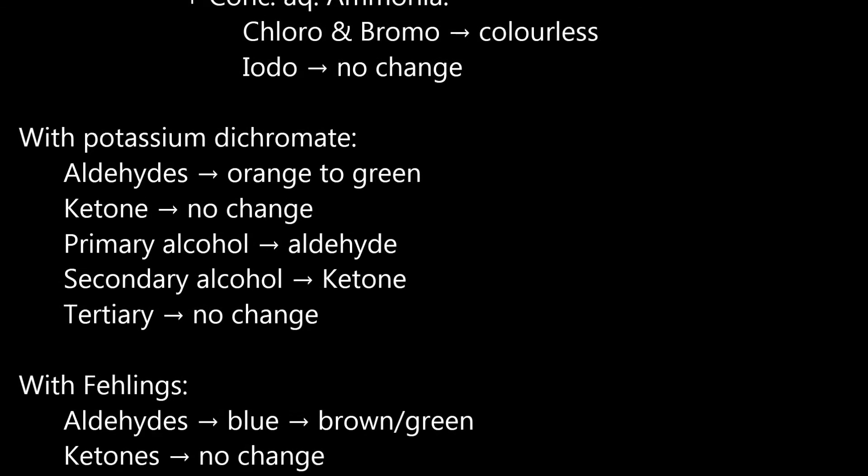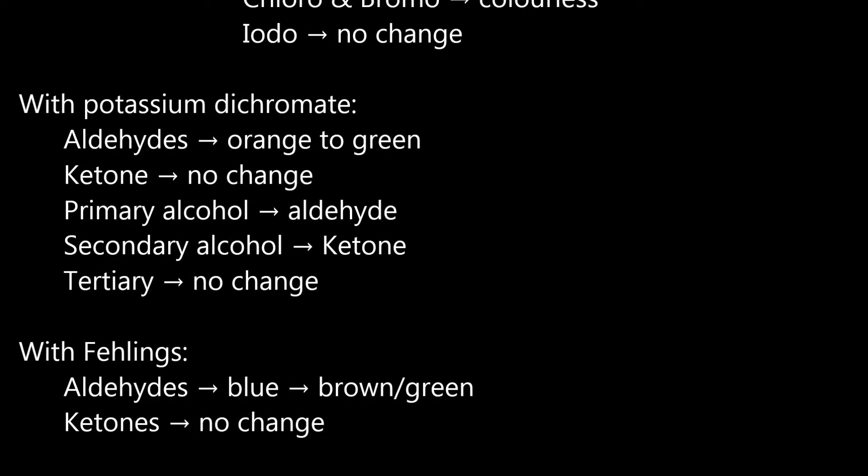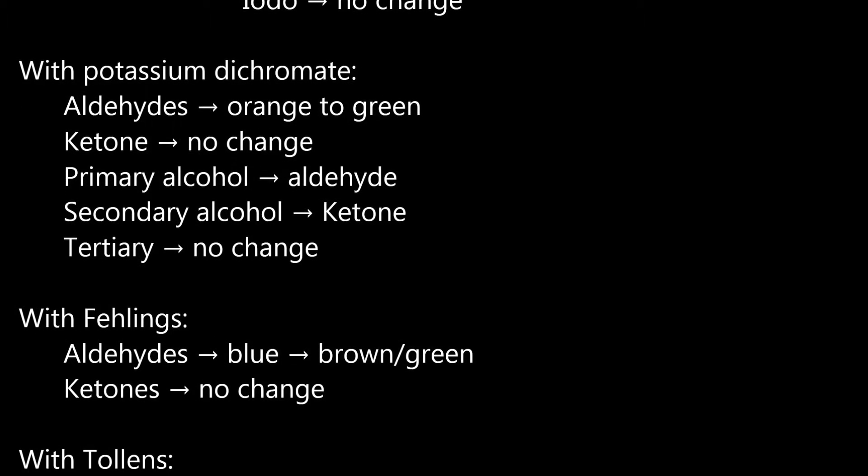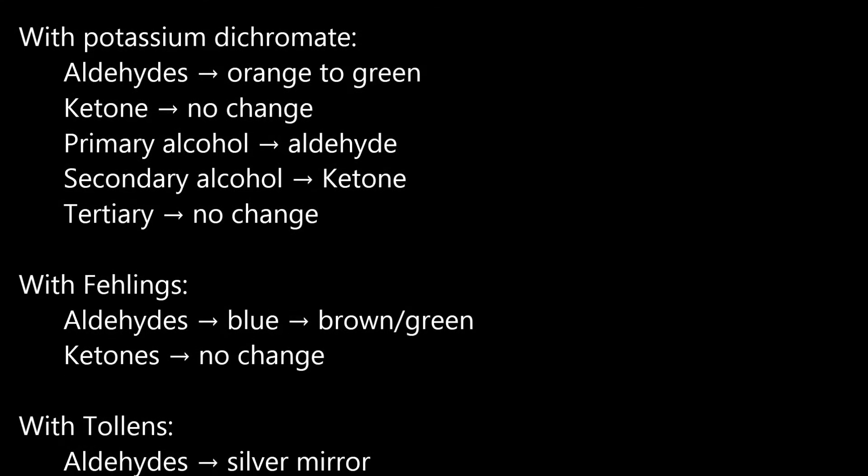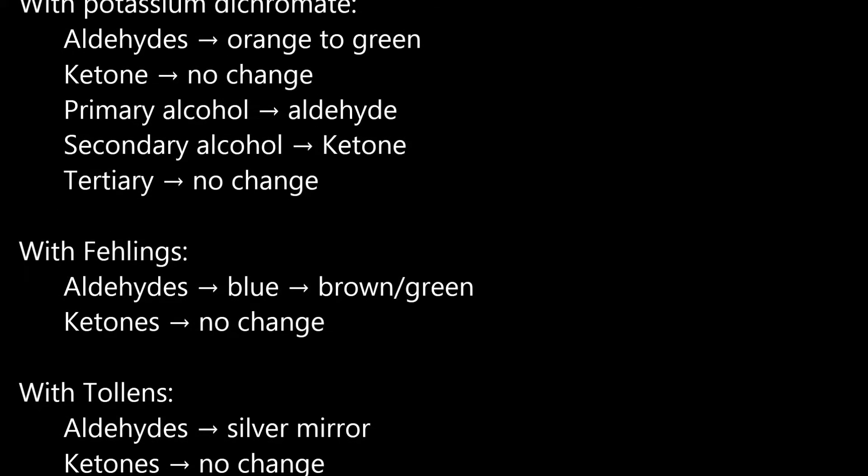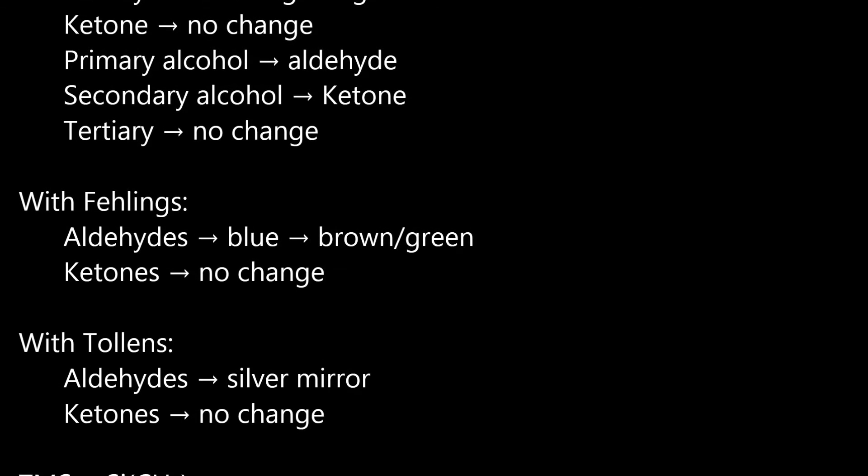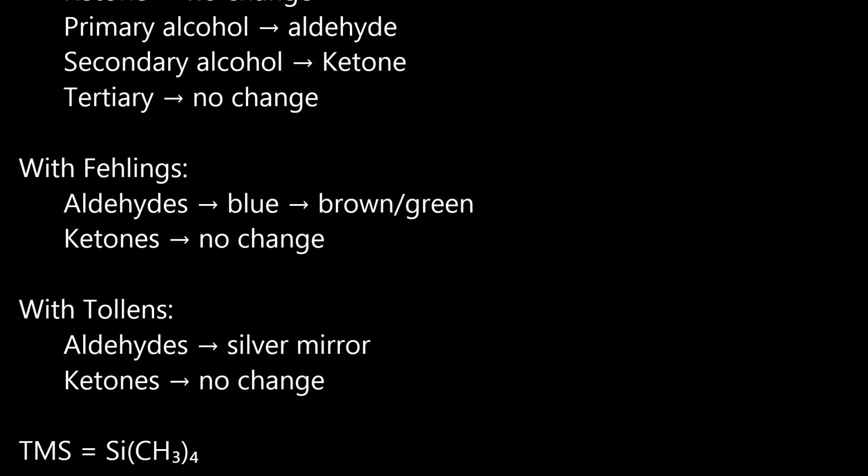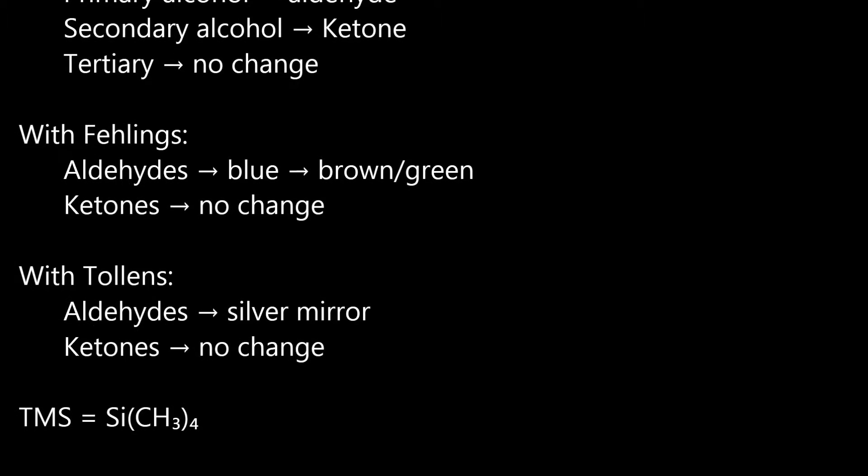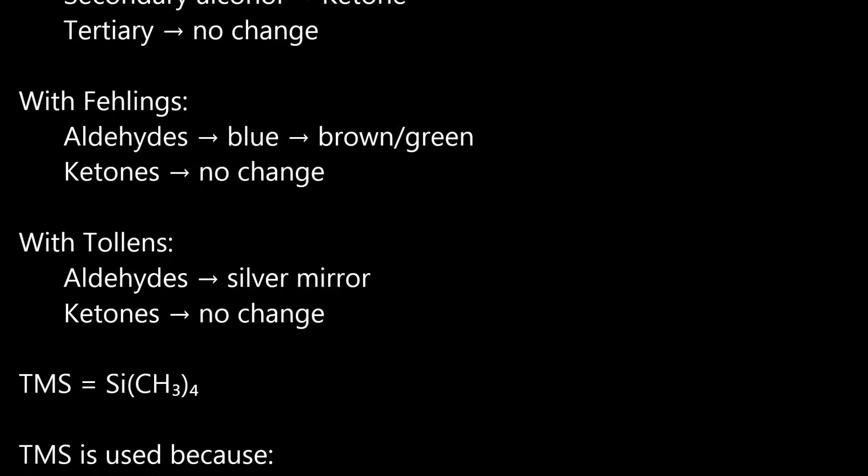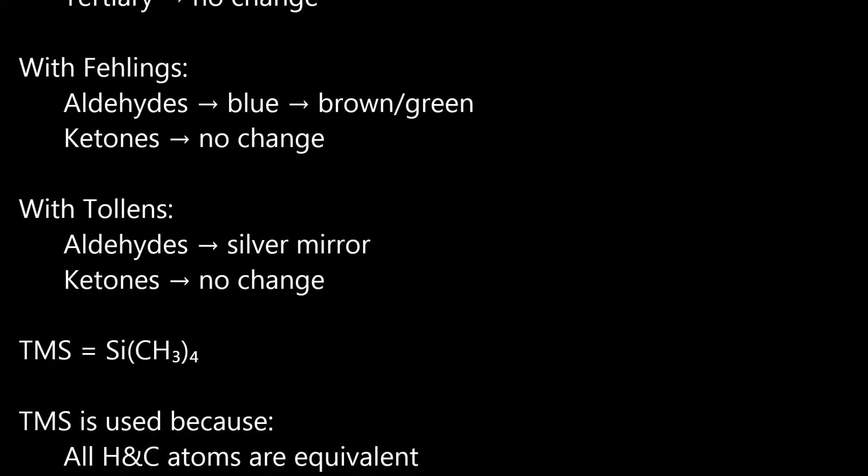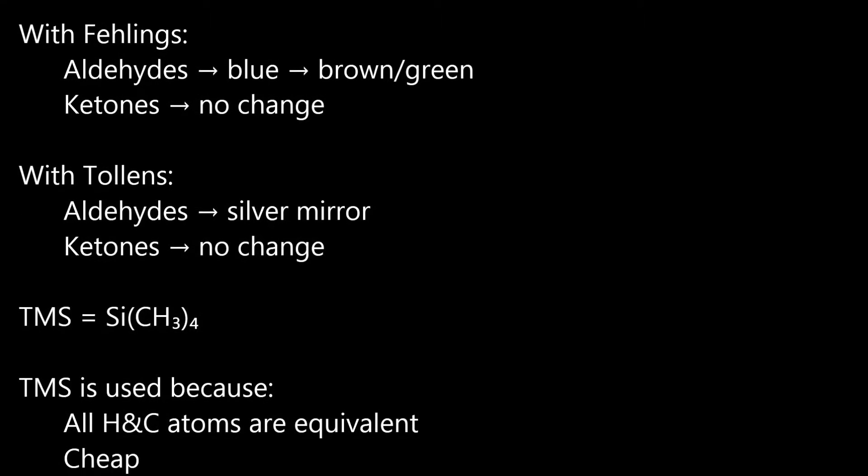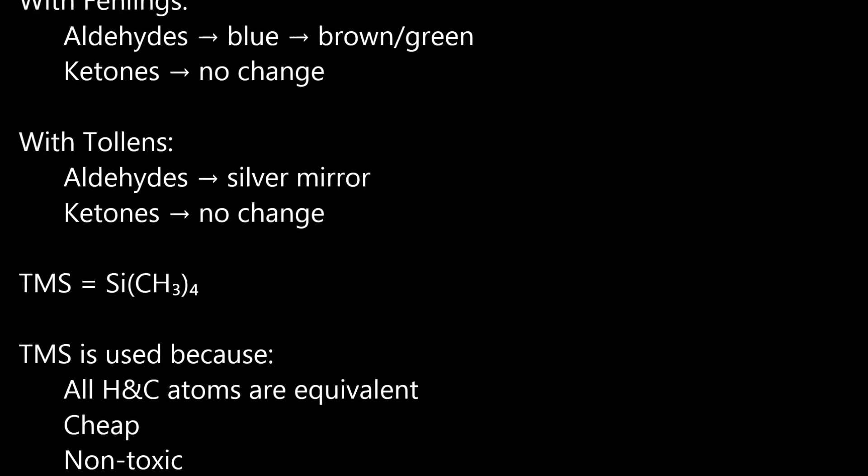With potassium dichromate, aldehydes go to orange to green, ketone goes to no change, primary alcohol goes to aldehyde, secondary alcohol goes to ketone, tertiary goes to no change. With Fehling's, aldehydes go to blue to brown-green, ketones go to no change.